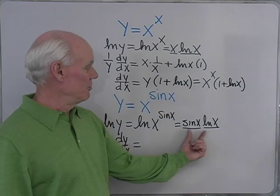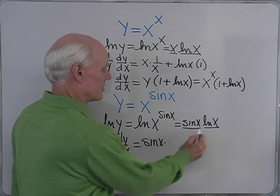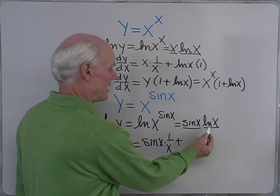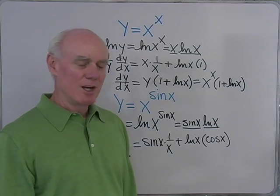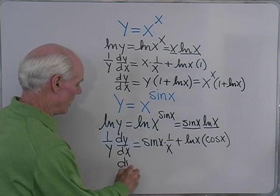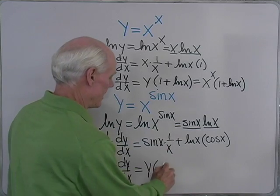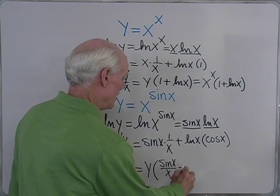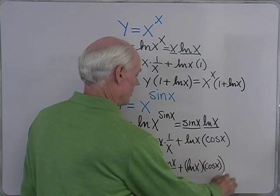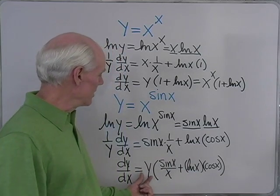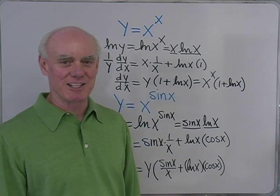Again, product rule — I have two functions of x being multiplied together, sine x and log x. So I'll take the first, sine x, times the derivative of the second, 1 over x, plus the second, log x, times the derivative of the first — cosine x. The derivative of sine is cosine. I'll multiply both sides by y. So dy/dx is equal to y times sine x times 1 over x, which I'll write as sine x over x, plus log x times cosine x. And then you would substitute y equals x to the sine x to get the full derivative.